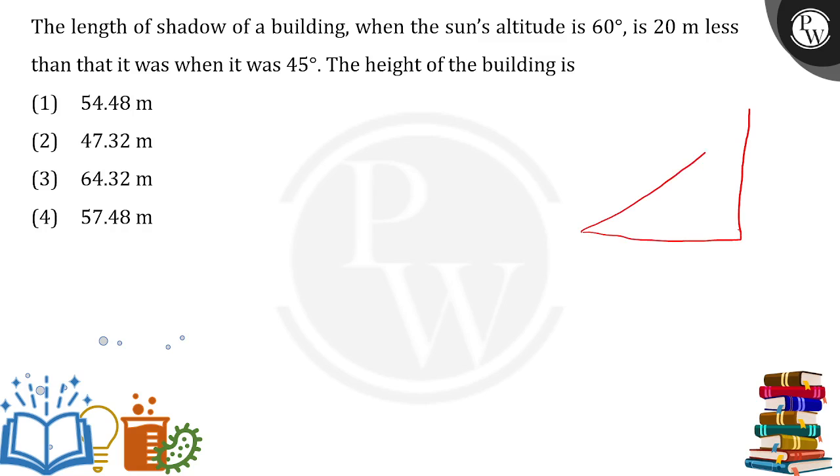So one will be at 45 degrees, the initial one or the lengthier one, and this will be somewhere 60 degrees. So sun would be somewhere over here. You can check for the angle of depression. Angle of depression will come out to be the same as angle of elevation. This is 45 degrees. This is 60 degrees.